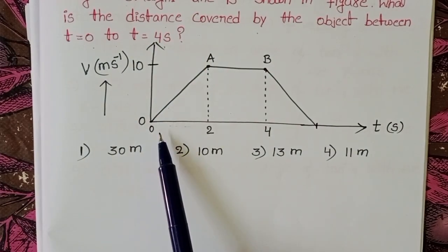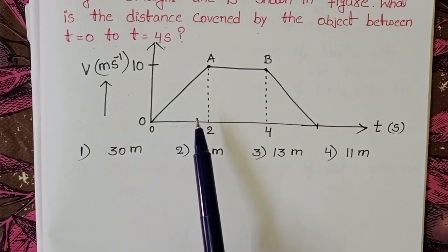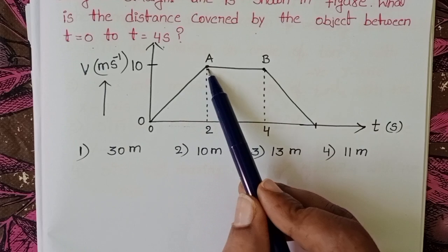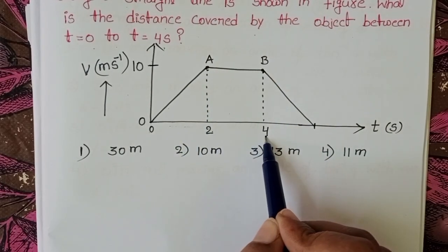In a velocity-time graph, the area of the velocity-time graph gives the distance or displacement of the object. From O to A, time is 2 seconds, and from A to B, time is 4 seconds.